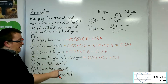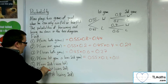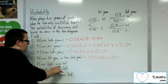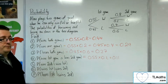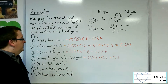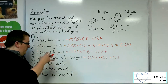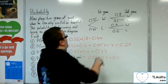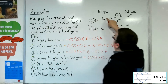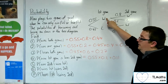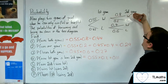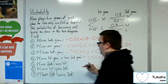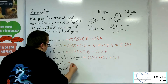Now we get to the conditional probabilities. What is the probability that he wins the second game, given that he has won the first game? There's actually a very easy way of seeing this on the tree diagram. Because given that he's won the first game, what's the probability that he wins the second game? Well, it's just 0.8. So the probability here is just 0.8.